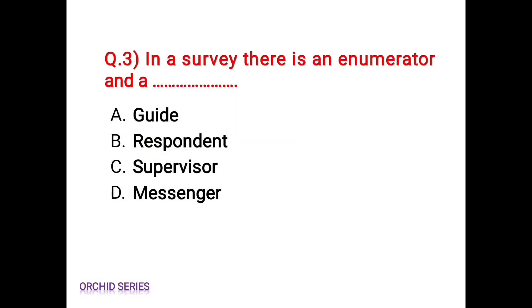Question number 3: in a survey there is an enumerator and a blank. Option A: guide, Option B: respondent, Option C: supervisor, Option D: messenger. The correct answer is Option B, respondent. In a survey there is an enumerator and a respondent.